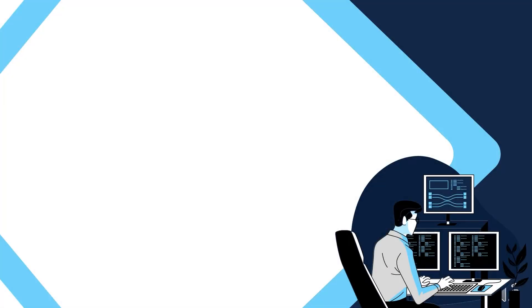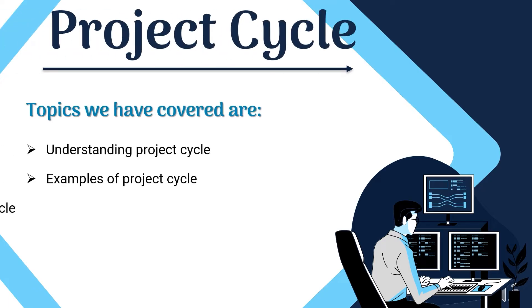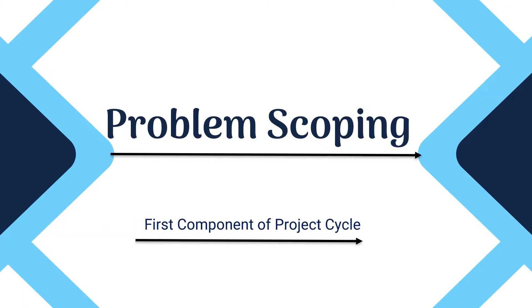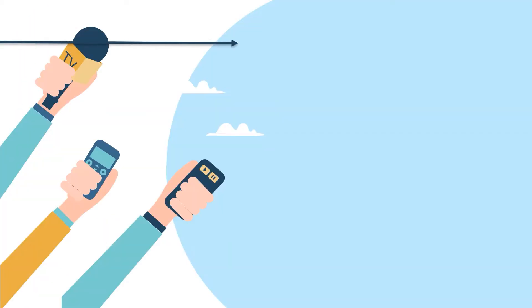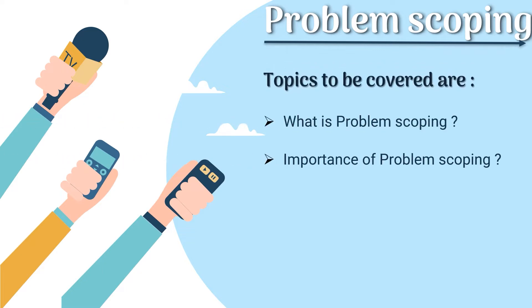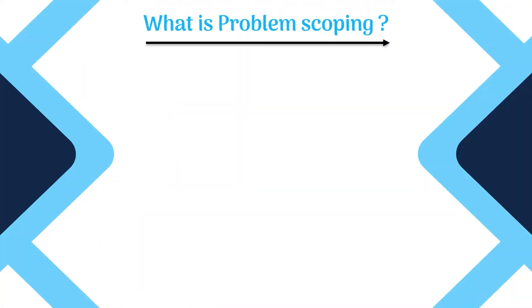Hello everyone, continuing the project cycle series. Till now we have discussed in brief about project cycle and its five stages. In today's video we are going to discuss about problem scoping, which is the first stage in AI project cycle. We are going to focus upon: what is problem scoping, importance of problem scoping, four W's of problem scoping, problem statement template, and using the problem statement template.